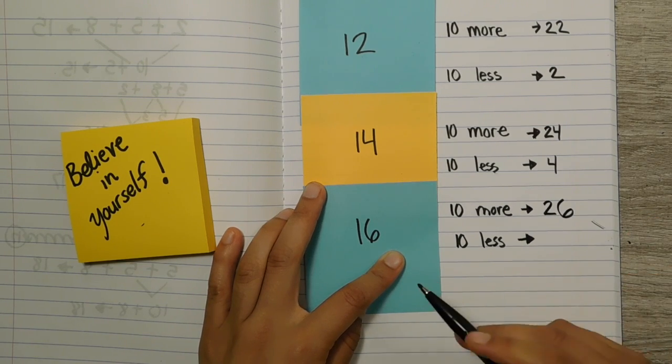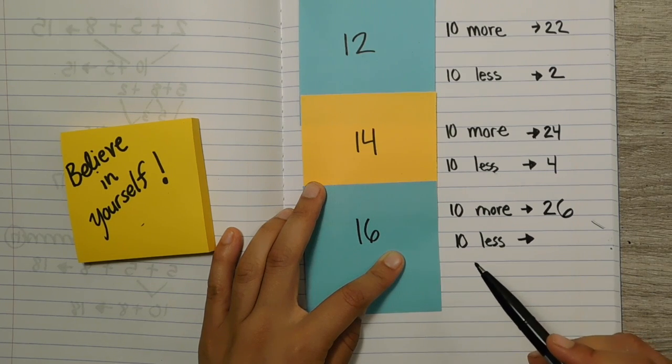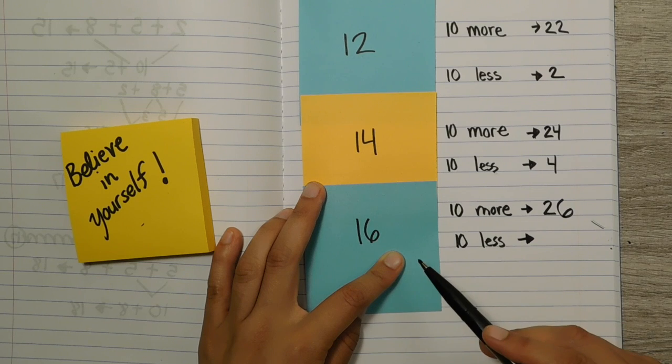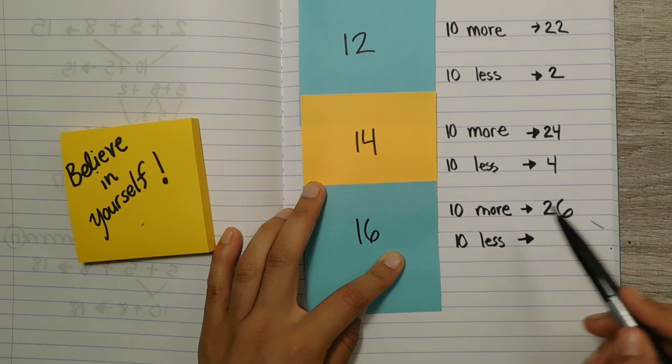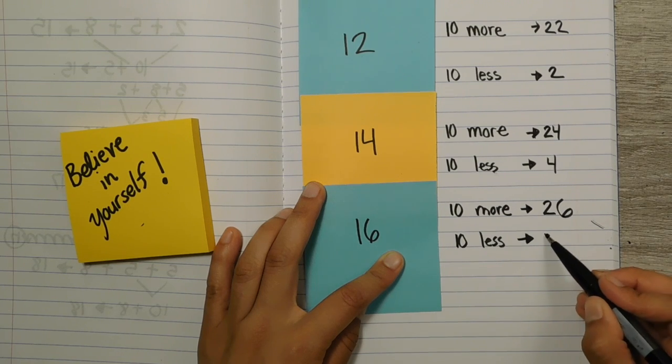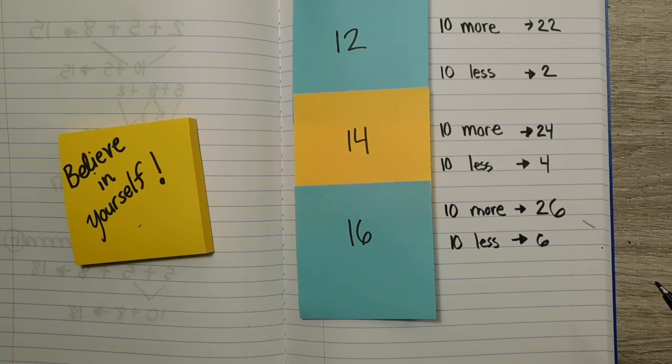And then if you got 16 and took 10 away. So if you had 16, but then you needed to take 10 away, what would that be? Six. Great work. And are you ready for the last one, mathematicians?